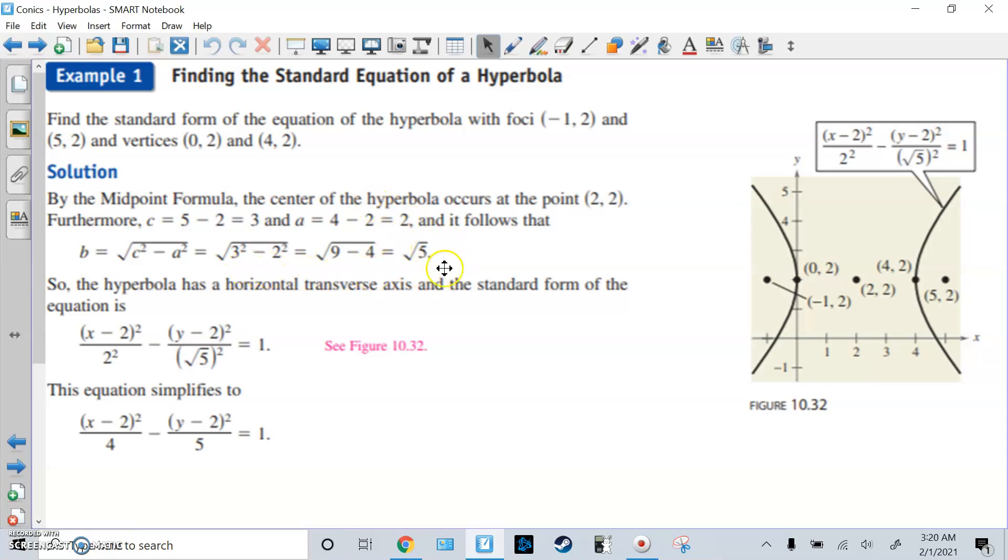Once you know A and B, just plug into the formula. Here, because it's horizontal, we have the x squared thing first. So x minus h, x minus 2 squared over A squared, so 2 squared. Then minus y minus k, which is y minus 2 squared over B squared, so that's square root of 5 squared, equals 1. You fix that: 2 squared is 4, square root of 5 squared is 5. That's the answer.